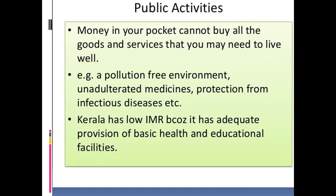Factors such as infant mortality rate, literacy rate, and net attendance ratio are considered along with income. The reason is that money in your pocket cannot buy all the goods and services you may need to live well. For example, money cannot buy a pollution-free environment, it cannot ensure you get unadulterated medicines, and it cannot provide protection from infectious diseases.